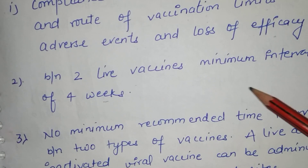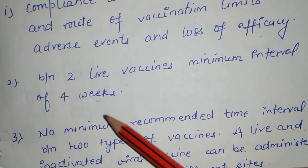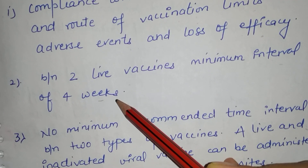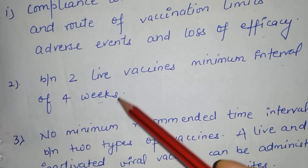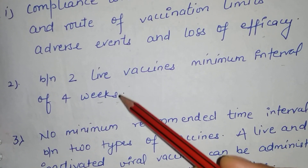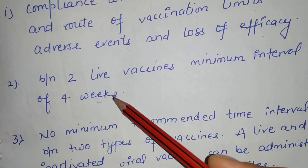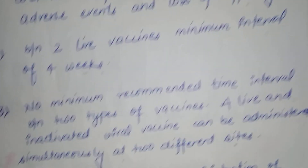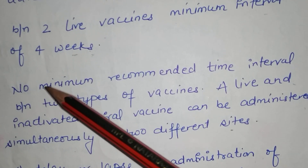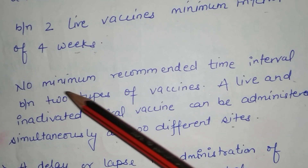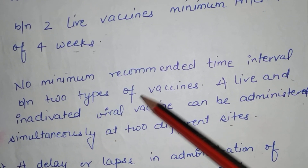The second principle is: between two live vaccines there should be a minimum interval of 4 weeks. That means two live vaccines should not be administered together — there should be a gap of at least 1 month.